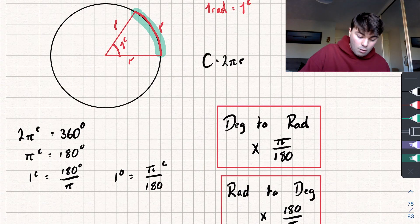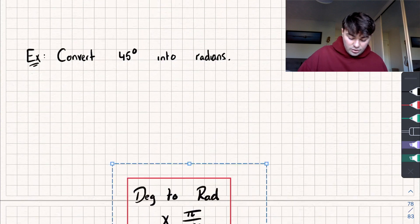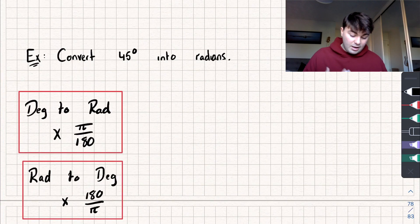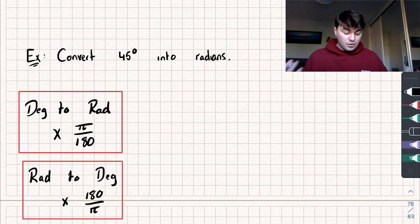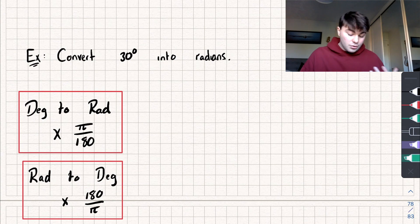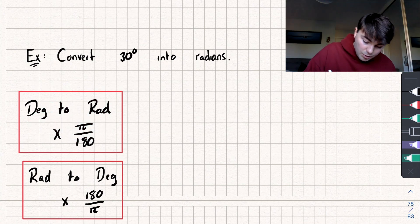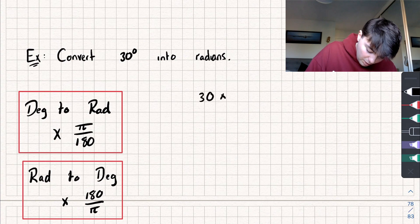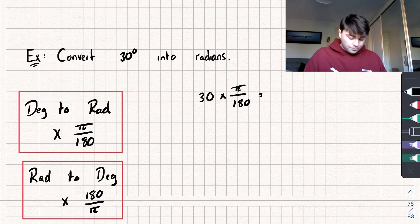We can use this now and let's answer some questions using this. Let me change it because we already did 45. Let's do 30 degrees to radians. We're going to use this one here because we're going degrees to radians, so we're just going to do 30 multiplied by π over 180, and if we do that we get an answer of π by 6 radians.